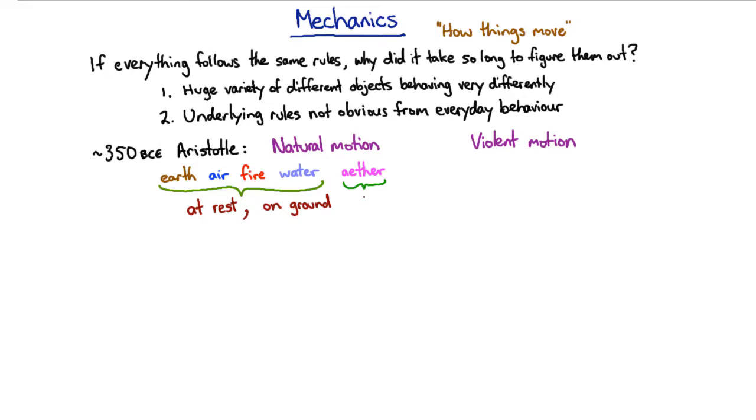And their natural motion was to move and stay in the sky. And then violent motion was everything that you would do to make something behave against its natural motion. So for example, if you throw a rock, which is mainly made of earth, the natural motion is for it to be at rest and on the ground, and you have to apply some force to it in order to make it move.